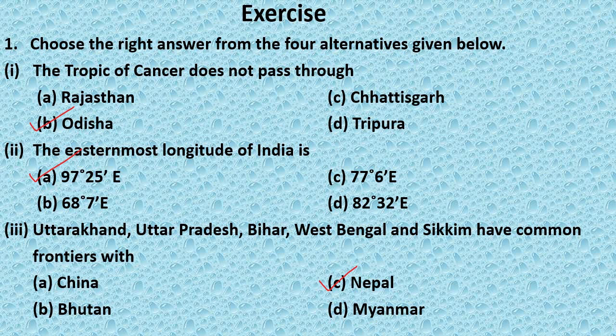Question 3: Uttarakhand, Uttar Pradesh, Bihar, West Bengal and Sikkim have common frontiers with — Option A: China, Option B: Bhutan, Option C: Nepal, Option D: Myanmar. Answer: Option C, Nepal.